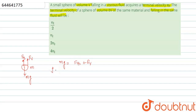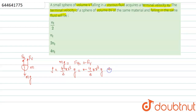Weight is equal to the density of the object times volume (4/3 π r³) times g. Buoyant force is equal to the density of liquid (sigma) times volume (4/3 π r³) times g. And the viscous force is equal to 6π eta r vt, where vt is the terminal velocity.